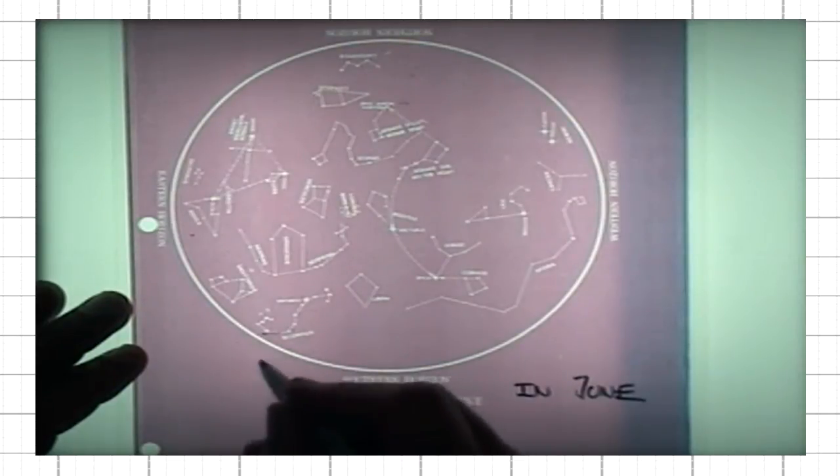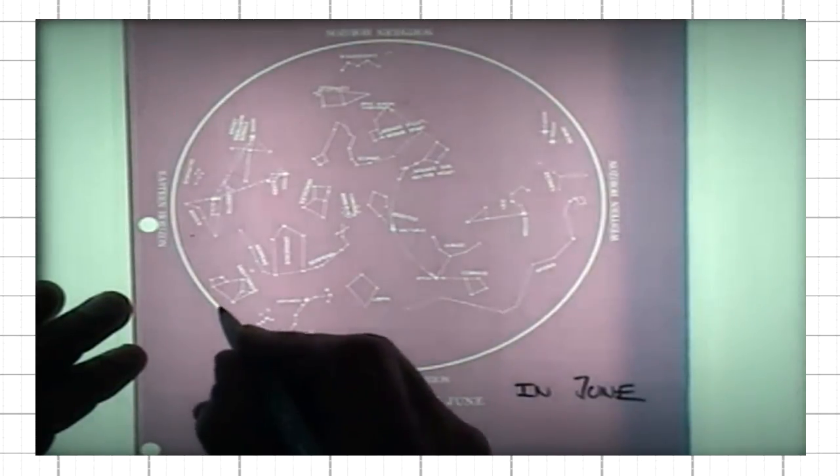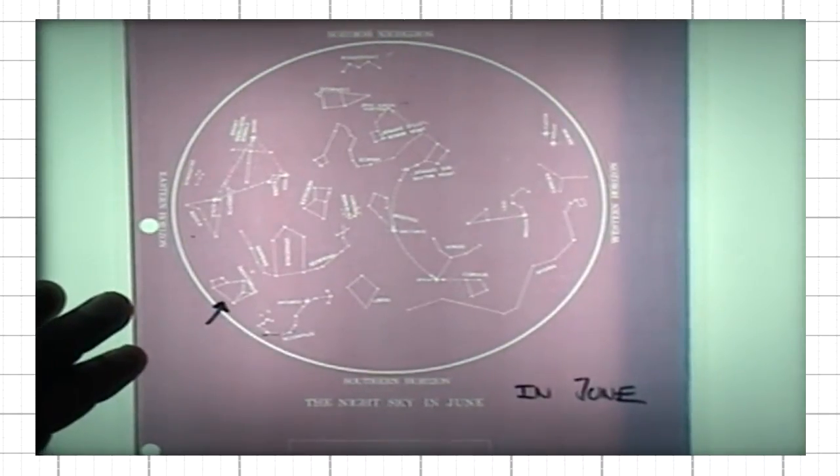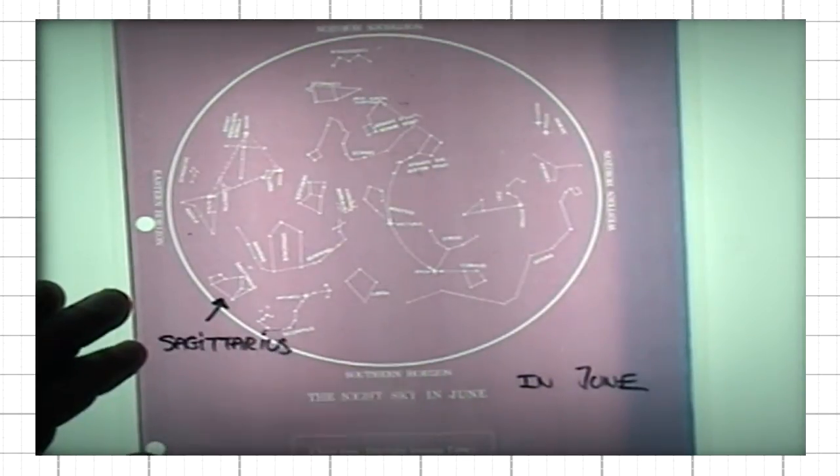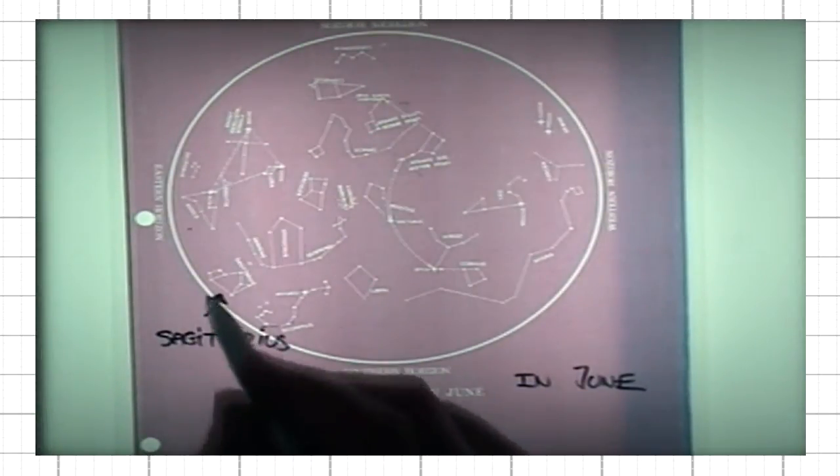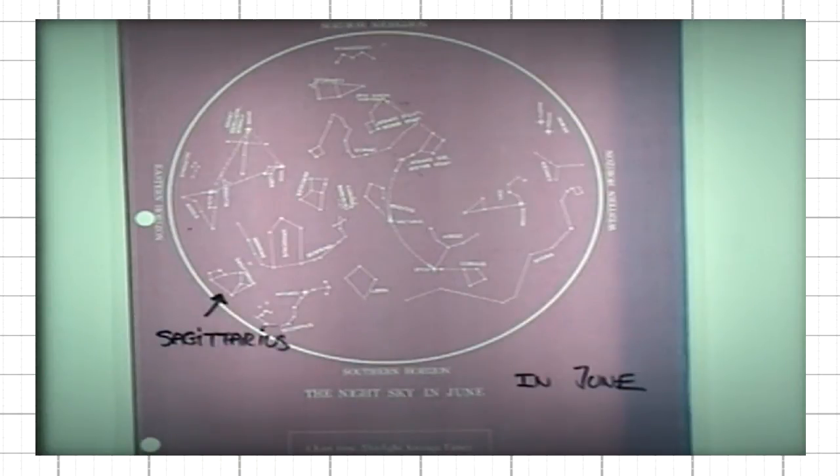Here we see the entire Scorpius, but we now see a constellation that was not visible before. We see Sagittarius, and recall that the direction of our galaxy is in the constellation of Sagittarius.